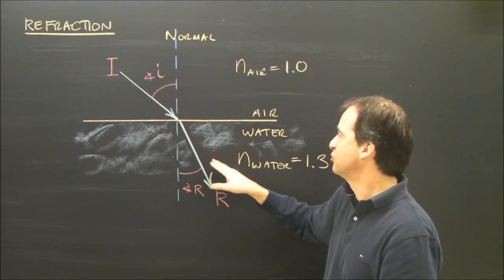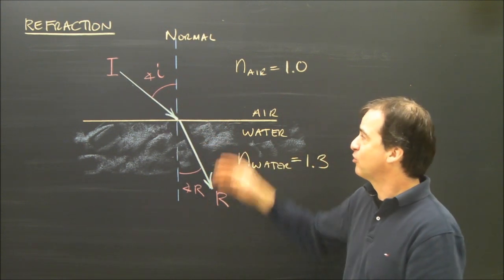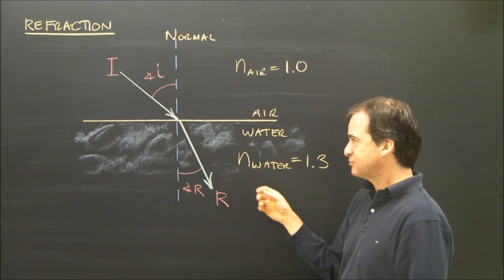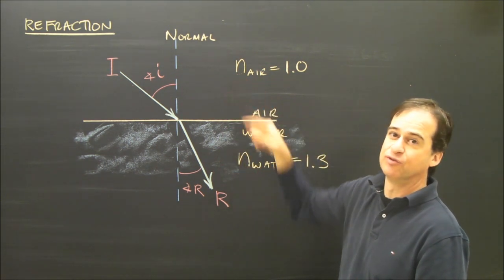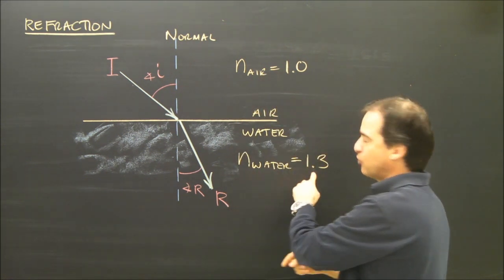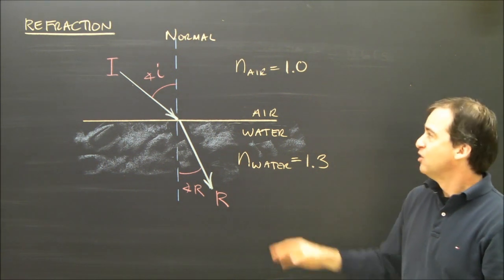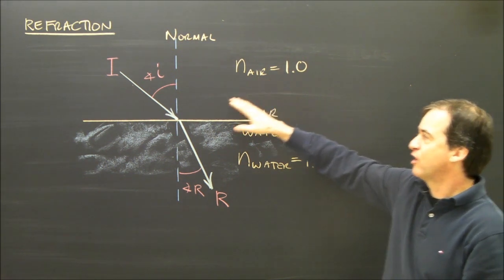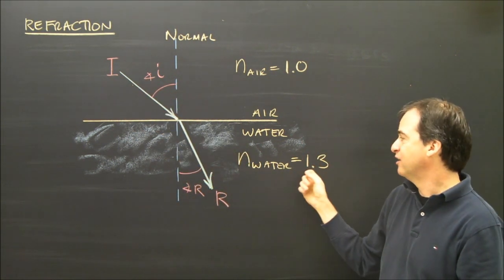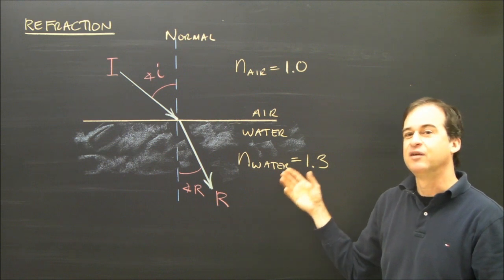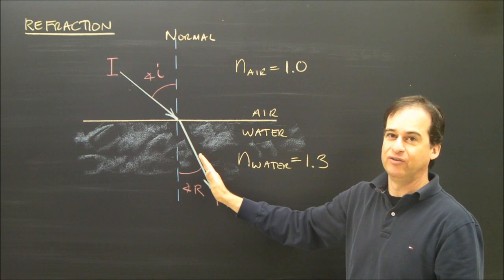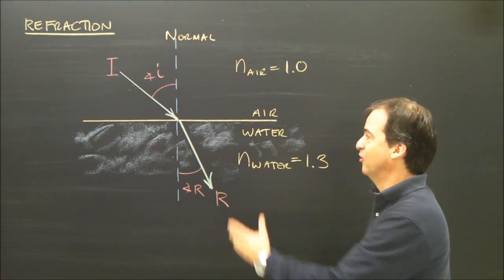Light is traveling from one material into another, and there's a number that corresponds to each of these materials — this could be air, this could be a diamond. There's a number called the index of refraction. The index for air is 1, and the index for water is 1.3. We consider air to be the lowest, so light travels as quickly as it can in air. When it goes into another material with an index higher than 1, the light slows down. As a result of slowing down, it bends.